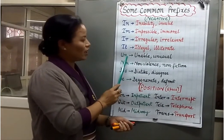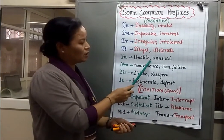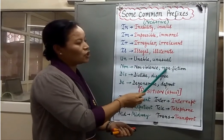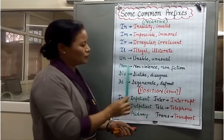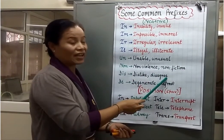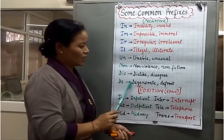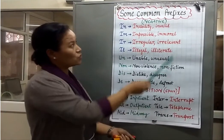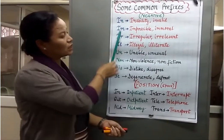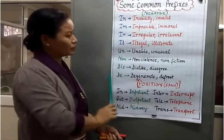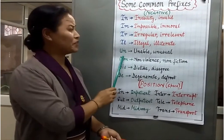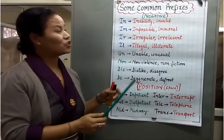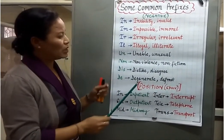In the same way, you have 'unable,' 'unusual,' 'non-violence,' 'non-fiction,' 'dislike,' 'disagree,' 'degenerate,' and 'defrost.' So you have seen that these are all negative prefixes that change the meaning of a word.